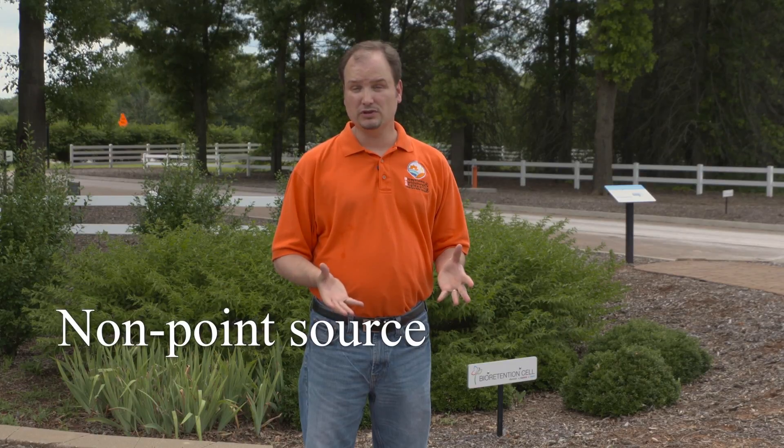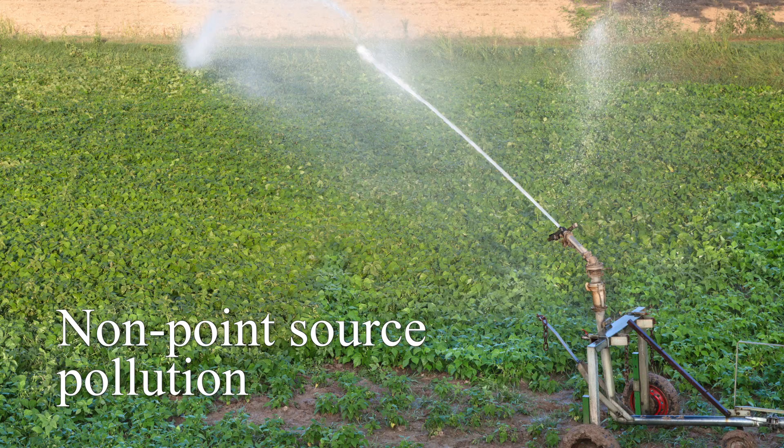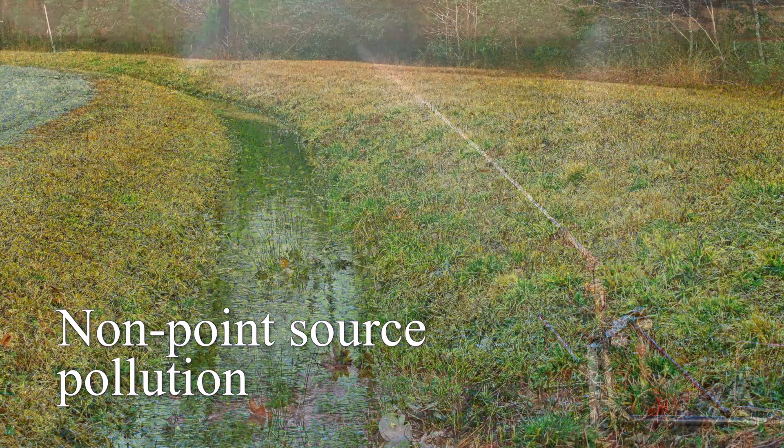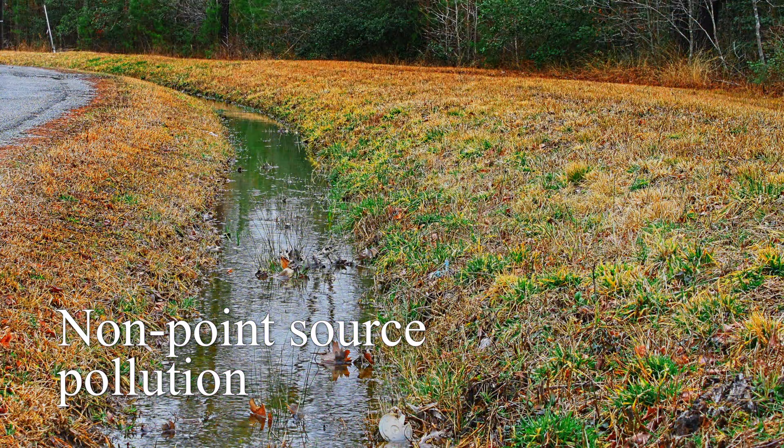The other type of pollution is called non-point source pollution. Non-point source pollution is that pollution that comes diffuse across the landscape, such as runoff from an agricultural field or runoff off of a lawn. That type of pollution is often harder to deal with because it comes in small amounts all across the landscape.